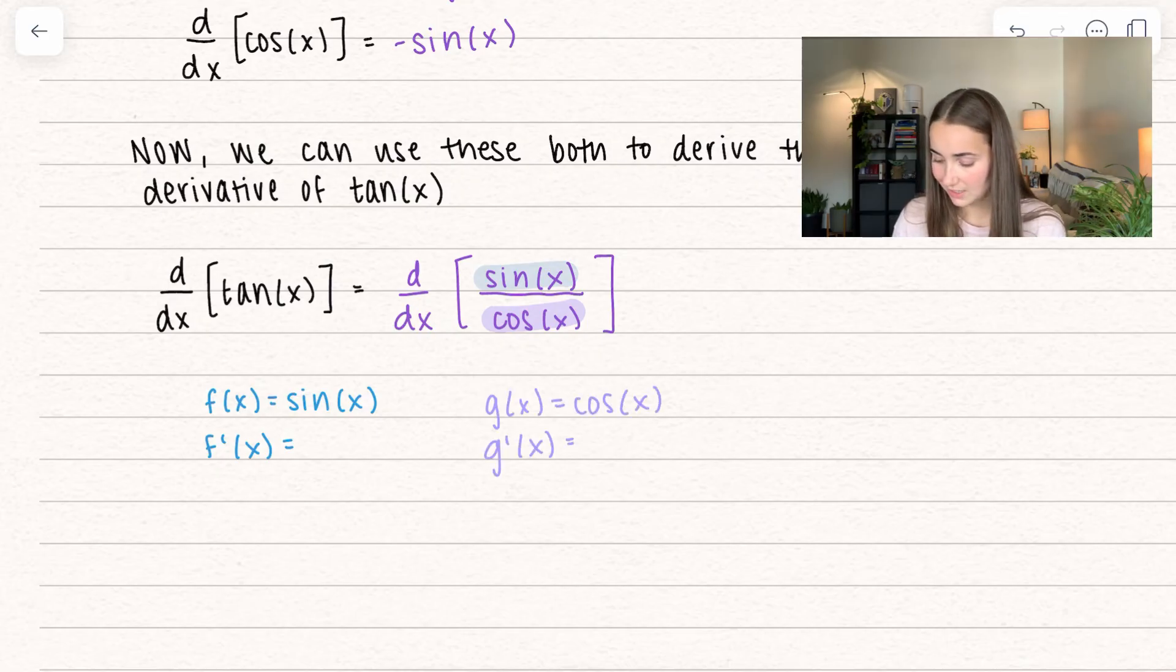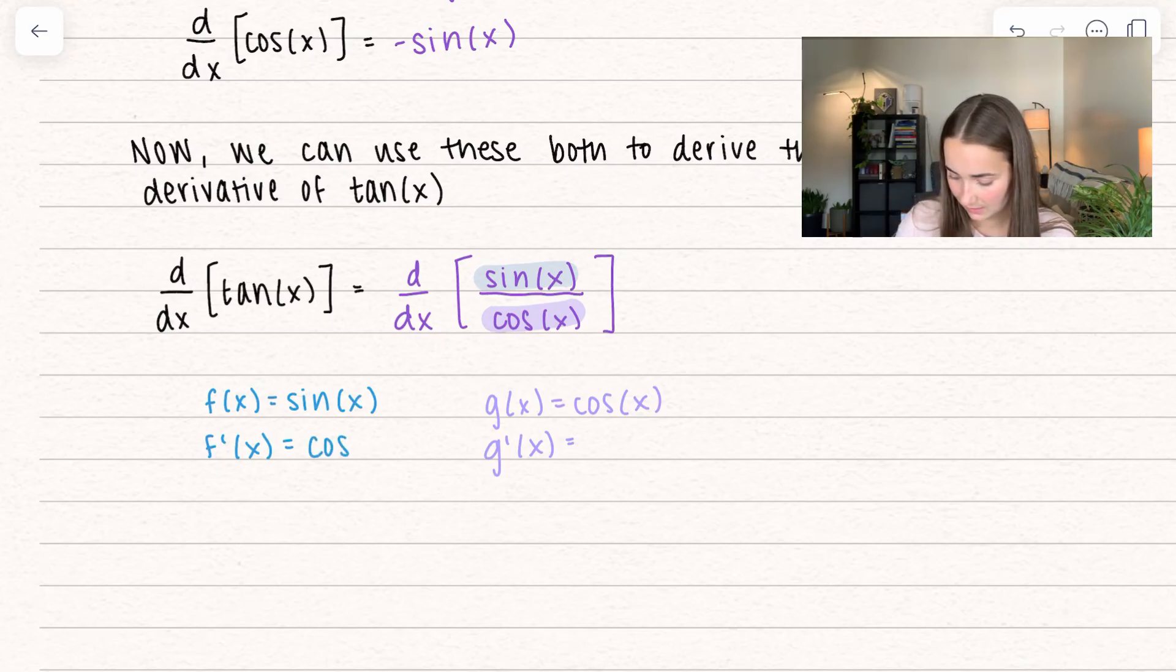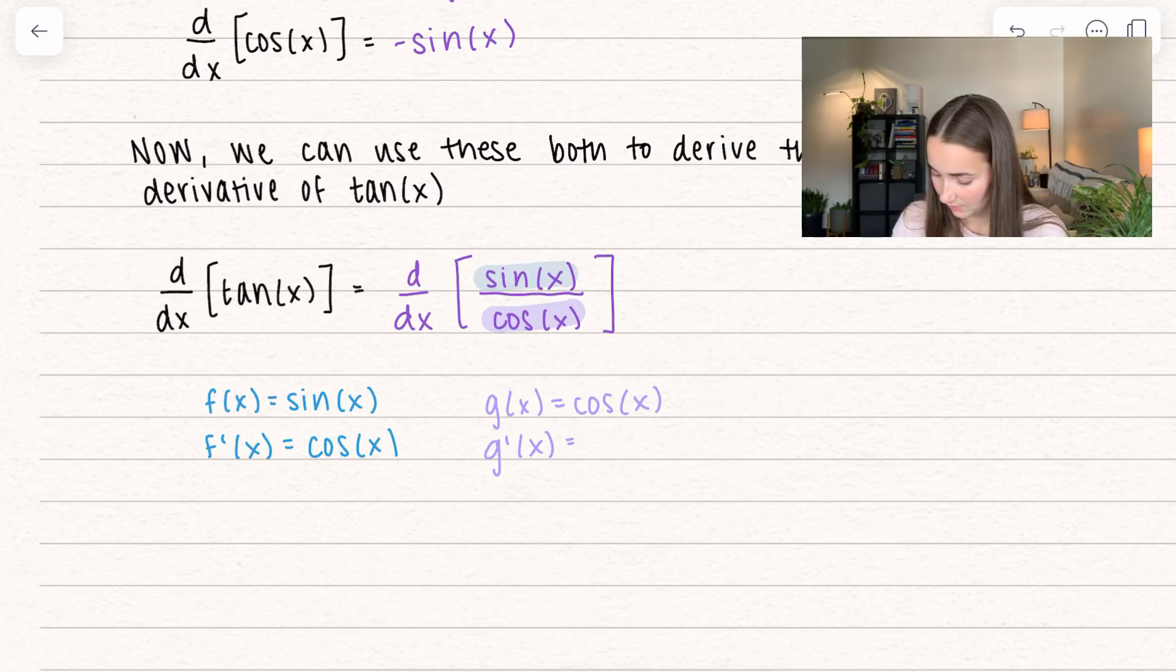We need to fill in the derivatives and that's what we just learned. The derivative of sine of x is equal to cosine of x and the derivative of cosine of x is equal to negative sine of x.